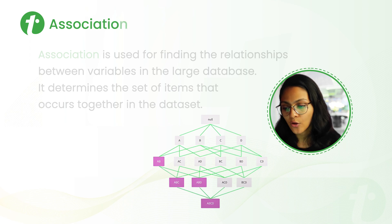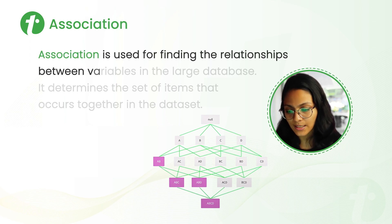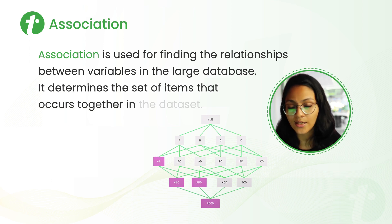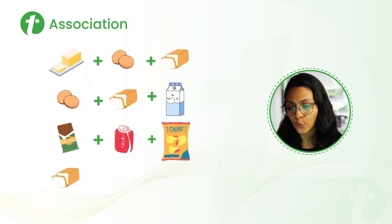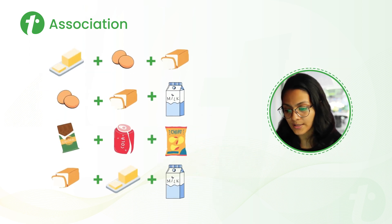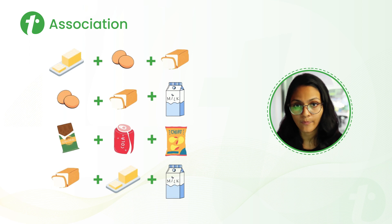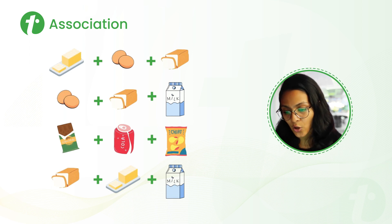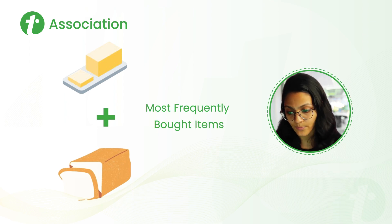Now, what is association? From definition, association is used for finding the relationship between variables in a large database and determines the set of items that occur together in the database. Let's understand this with an example. Here are some combinations of foods that a person buys from a shop — for example, butter, egg, bread, egg, butter, milk, etc. We input this into our model, and the model predicts that the combination of butter and bread are the most frequently bought items. So this is how association works.